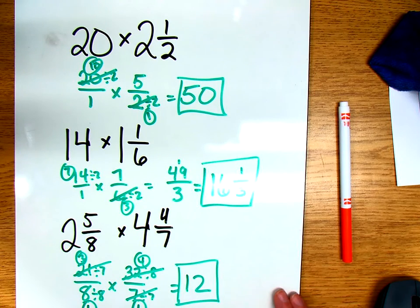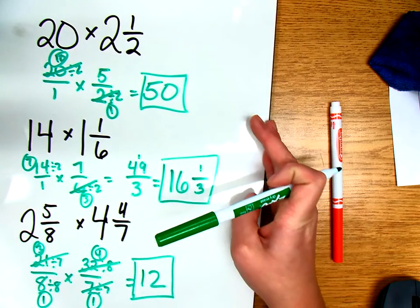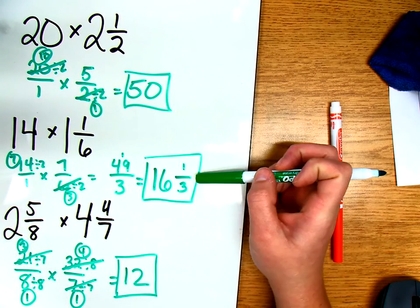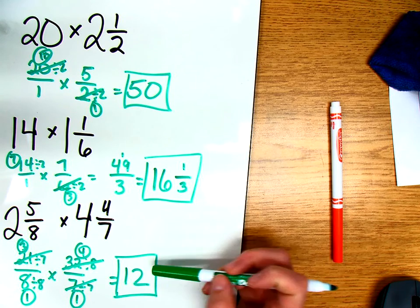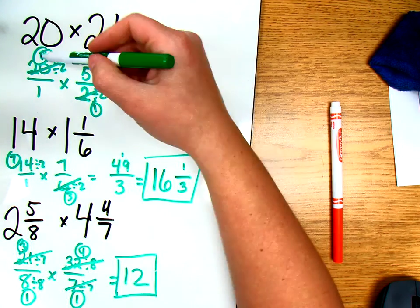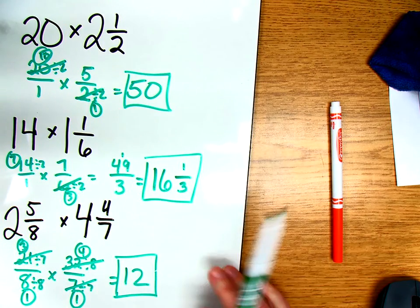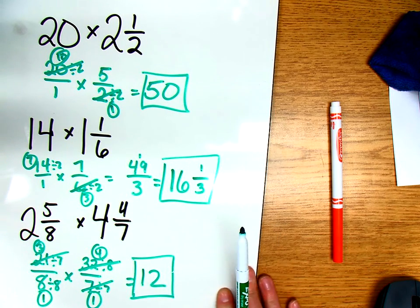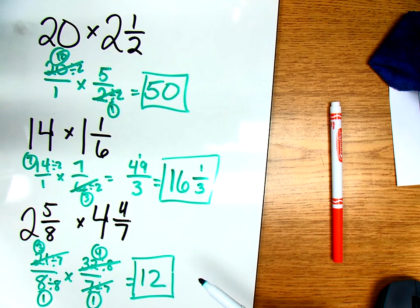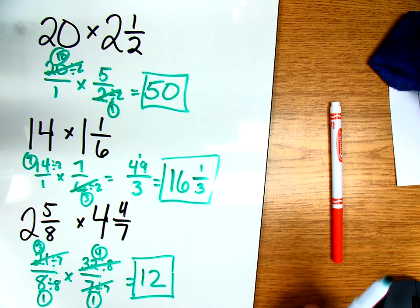If you're unpausing and you're back at this point, you can see for the first question I got an answer of 50. For the second question, I got an answer of 16 and 1/3, and for the last question I got an answer of 12. Feel free to pause and take a look at what I cross-simplified and my improper fractions here. Make sure you have the correct improper fractions, make sure you cross-simplified correctly, and these should be your answers. Any questions, let me know.